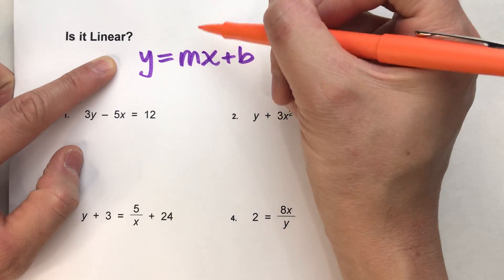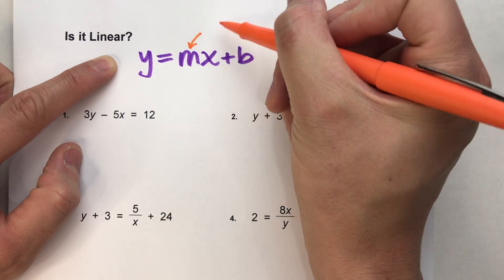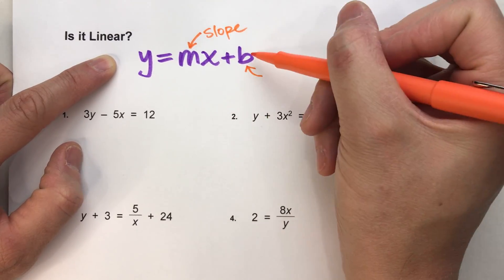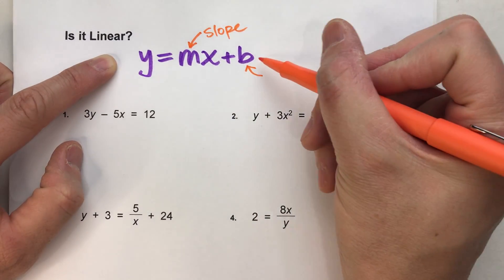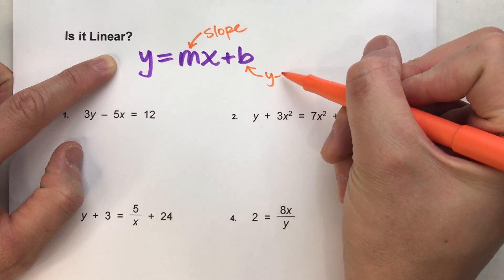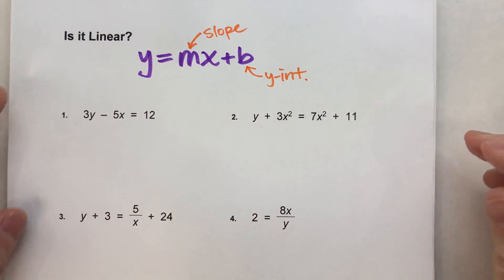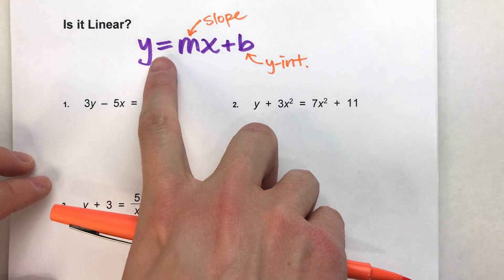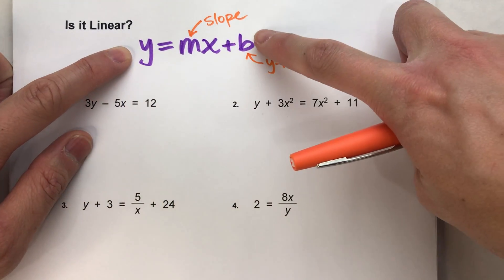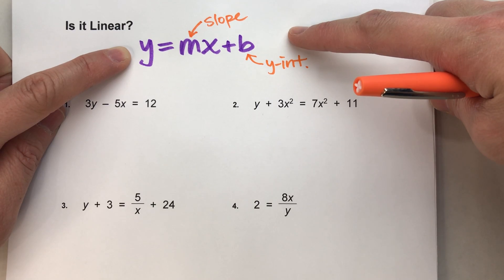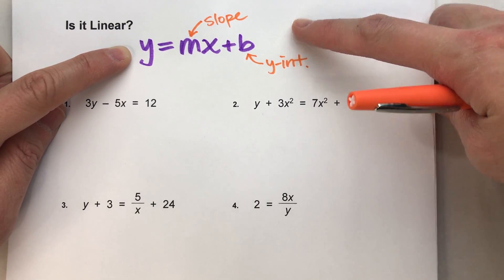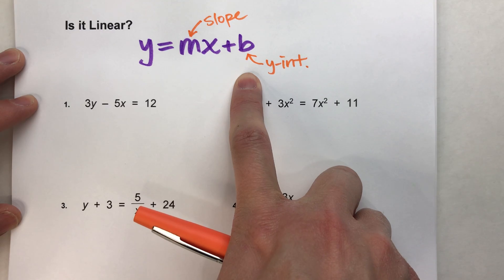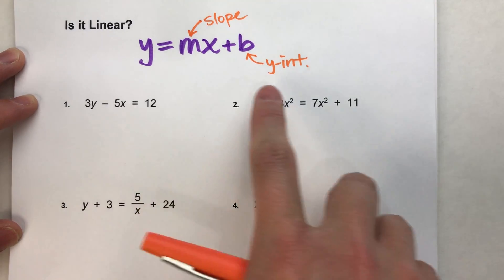m, the number next to x, is the slope, and b, the number added without an x next to it, is the y-intercept. So if we can use algebra to rearrange an equation to get it into this form, we know it's a line because it'll be in slope-intercept form. Let's do a few examples so you can get an idea of how to do this.